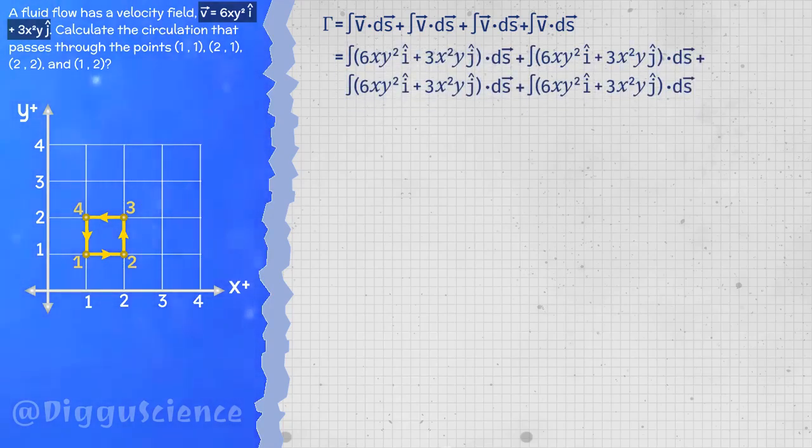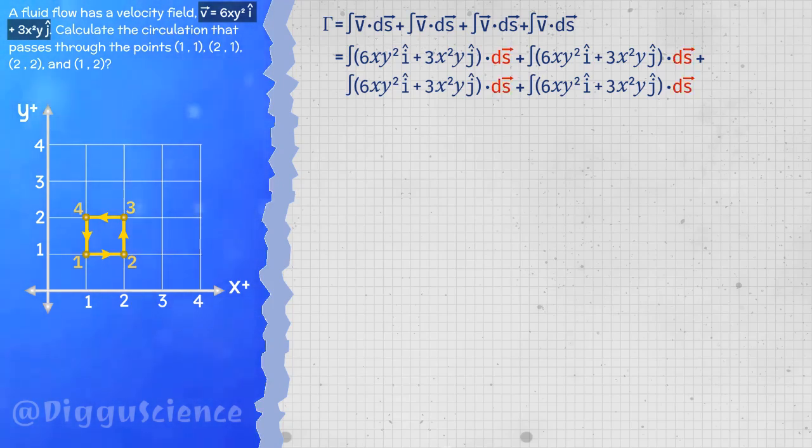We have known the velocity field. In the two-dimensional Cartesian coordinate system, the vector ds is the vector dx i hat plus dy j hat.